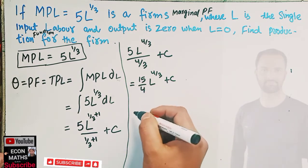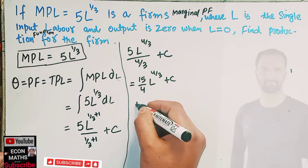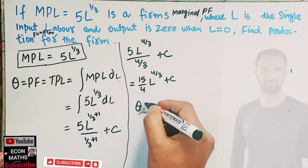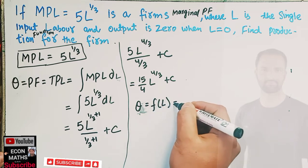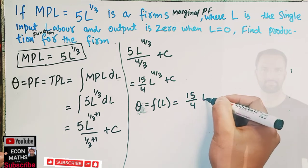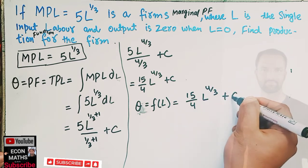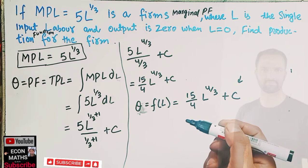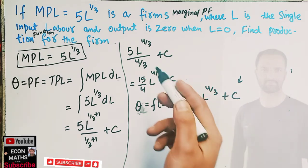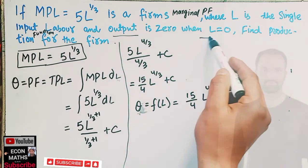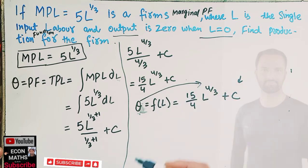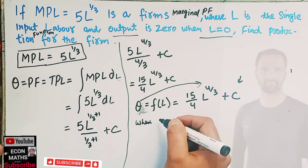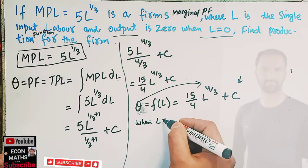So our production function Q as a function of L is equal to 15/4 times L to the power 4/3 plus C, the constant of integration. Now to determine the constant of integration, we use the initial condition. The initial condition given is that output is 0 when L is equal to 0.